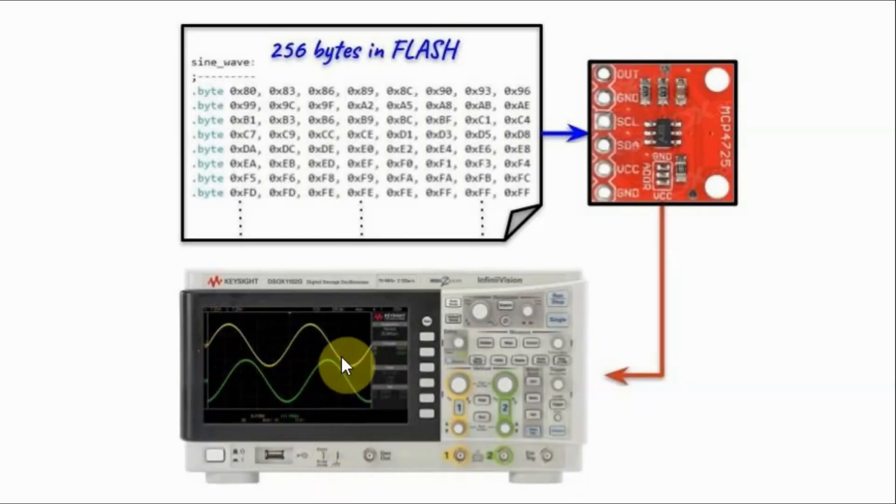To sketch a sinusoid on the scope, within the assembly code we store 256 bytes in flash memory. And through pointer Z, we grab each byte, send it to the DAC, and the analog converted value is displayed on the scope. We repeat this 256 times.